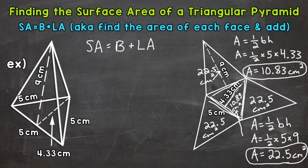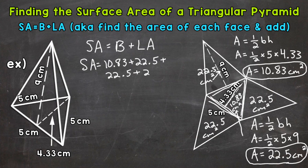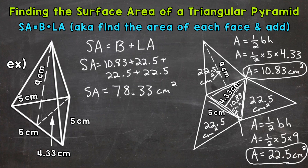Surface area equals the area of the base, 10.83, plus our three lateral faces: 22.5 plus 22.5 plus 22.5. I'll go below here to make sure we have enough room. Once we add all of that up, that gives us our total surface area — seventy-eight and thirty-three hundredths square centimeters. So that is our total surface area.